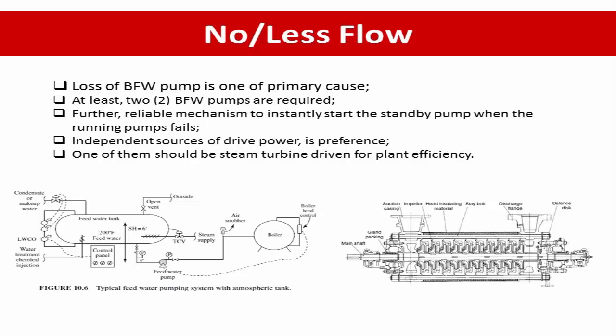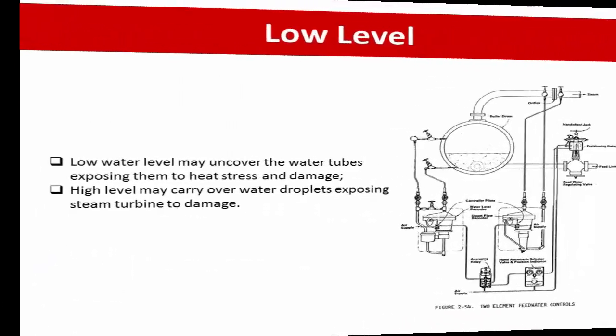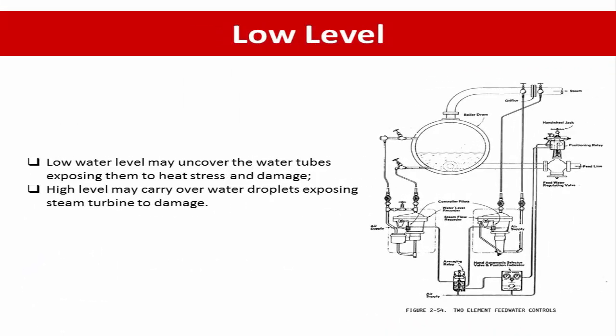Another cause of no or less flow to the boiler during HAZOP review is malfunction of flow control, where the flow of feed water to the boiler drum is normally controlled in order to hold the water level in the steam drum as close as possible to the normal water level. Low water level may uncover the water tubes, exposing them to heat stress and damage, while high level may carry over water droplets, exposing the steam turbine to damage.